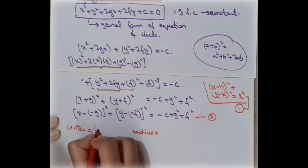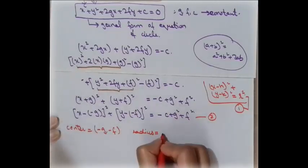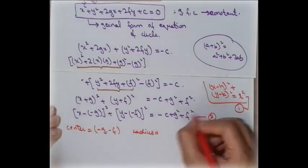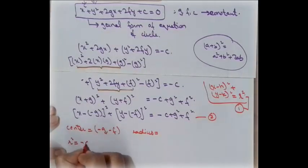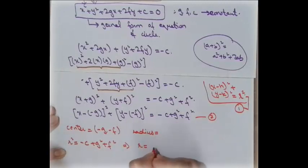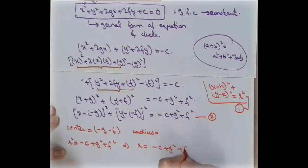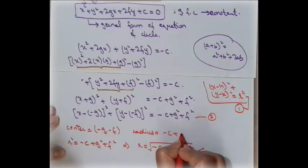From the comparison, the center of a circle given in general form is (−g, −f), and the radius is r = √(g² + f² − c). Taking the square root of r² = g² + f² − c gives us the radius formula for the general form of the equation of a circle.